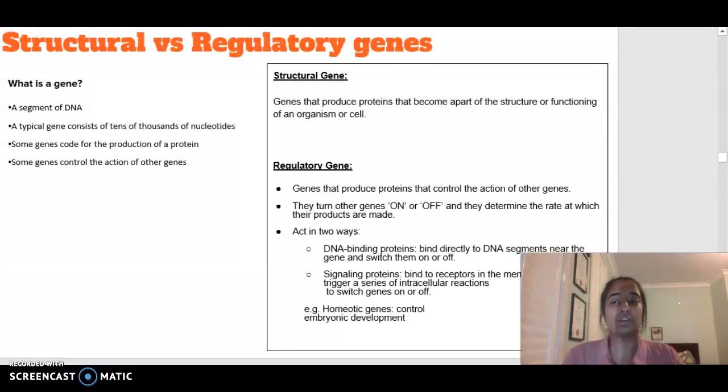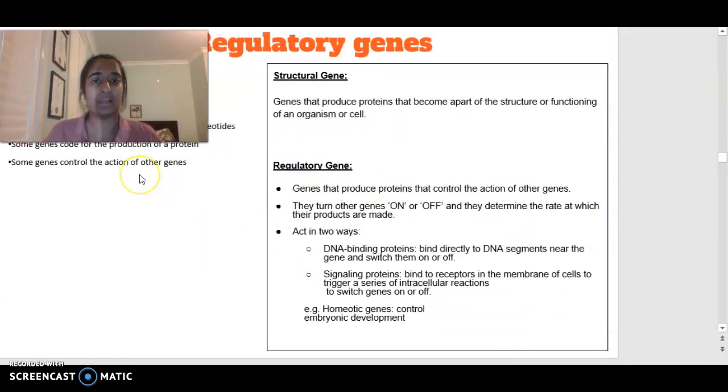Let's make a start looking at structural and regulatory genes. A gene is a segment of DNA, and a typical gene consists of lots of nucleotides, lots of ATCGs, all made up together to form a code. Some genes code for the production of a particular protein and undergo transcription and translation, whereas other genes control the actions of other genes. A structural gene is a gene that produces proteins that become part of the structure or functioning of an organism or cell.